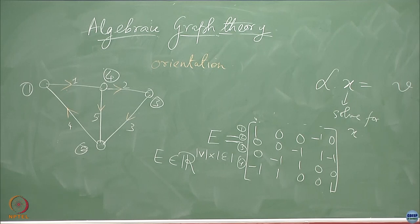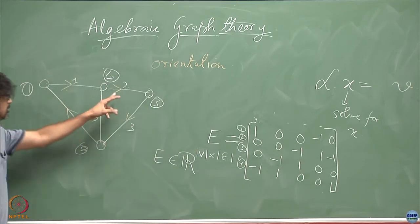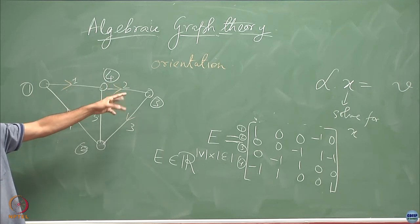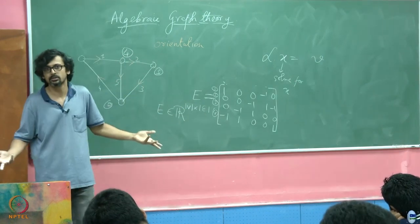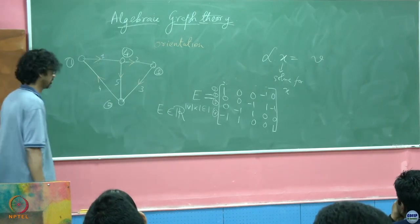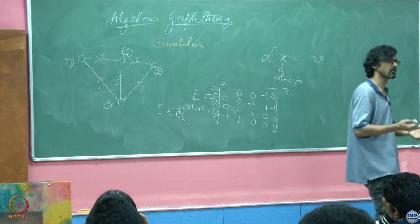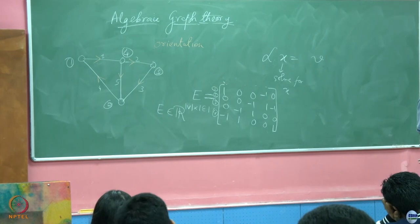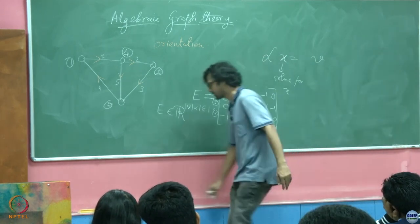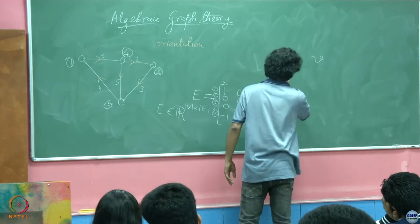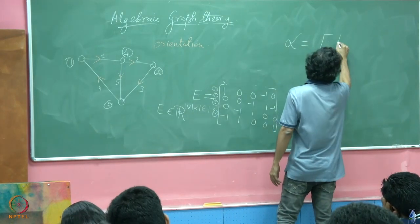You could have given any arbitrary orientations and these signs would have flipped — so there are 2 to the cardinality of the edge set possible combinations. But it matters not, because just like the degree and adjacency matrices, the incidence matrix paves the way for constructing the graph Laplacian. I will put it to you that this Laplacian, defined in terms of degree and adjacency, is nothing but E times E transposed.